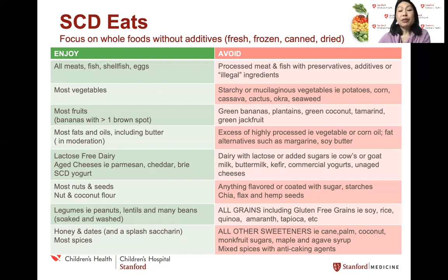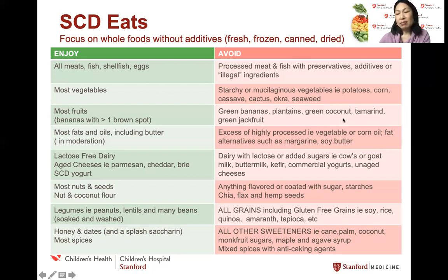What you can't have are green bananas, plantains whether green or yellow, green coconut including the coconut water bought at the store even if it has nothing added. You can't have tamarind because again it's kind of mucousy and sticky, and green jackfruit is not allowed either. You can have all fats and oils including butter and including oils made from things that are not allowed on the SCD, like corn oil. Corn is not allowed but the corn oil is, because it doesn't contain the sugars or the starches — only the fat.